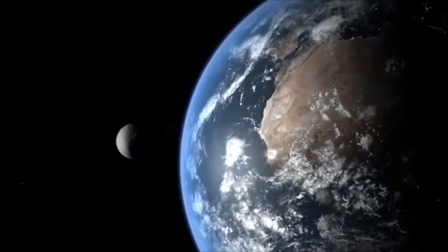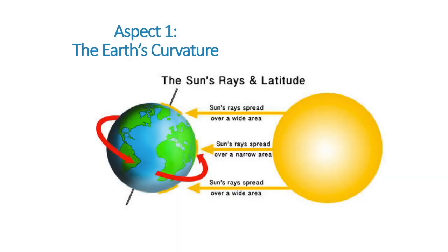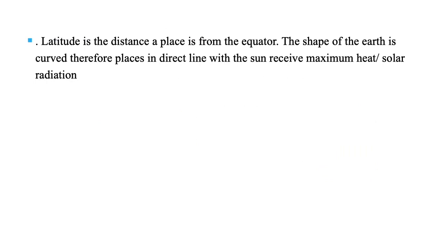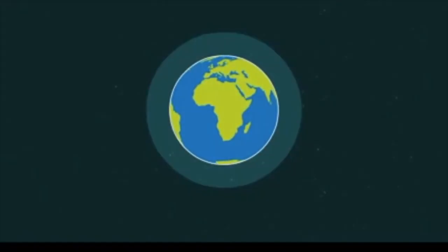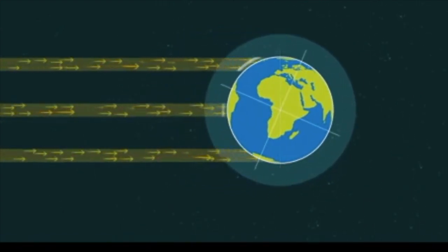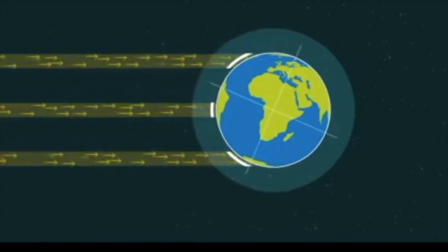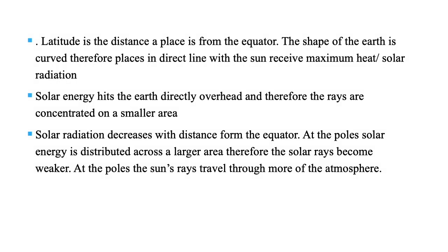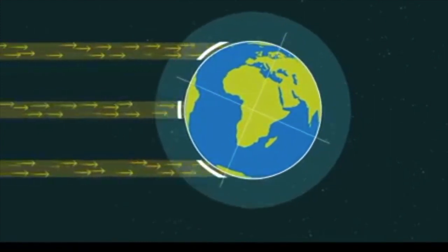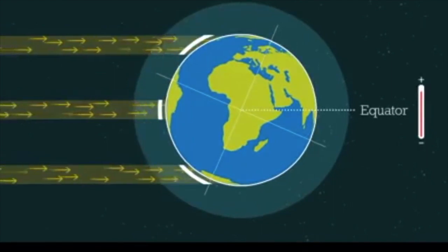Our first aspect is the curvature of the earth. Solar energy is unevenly distributed around the earth's atmosphere and ocean environment. Latitude is basically the distance a place is from the equator. The shape of the earth is curved, and therefore places in direct line with the sun receive maximum solar radiation — for example, Ecuador. Solar radiation decreases with distance from the equator, and at the poles energy is distributed across a larger area, so solar rays become weaker.